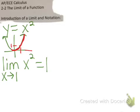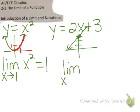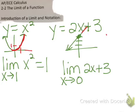For another simple function, y equals 2x plus 3 — start at 3, slope is 2, go up 2 over 1. If I ask what's the limit of this function as x approaches 0 of 2x plus 3: from the right side I'd be getting closer and closer, from the left side getting closer and closer. Both of them, as I get closer to 0, the y value is getting closer to 3.